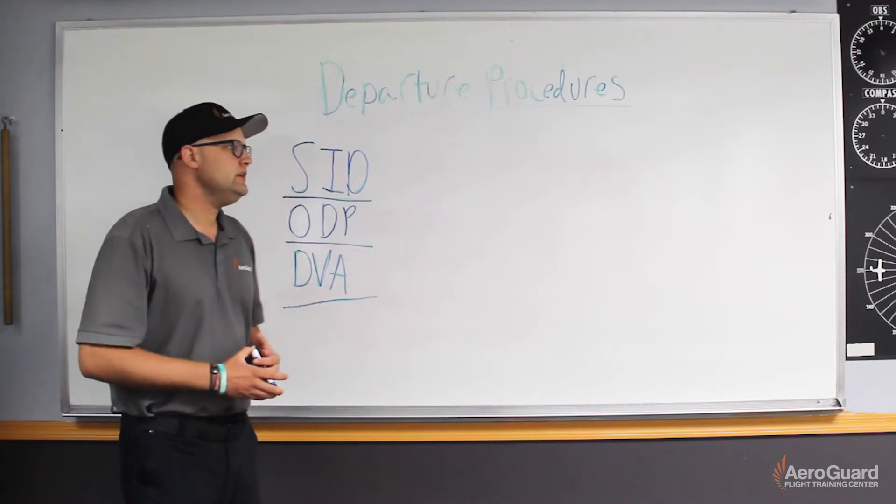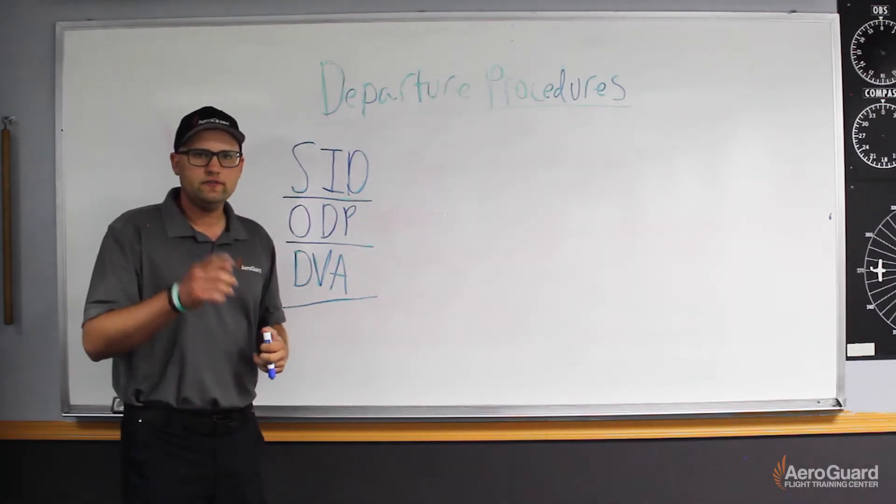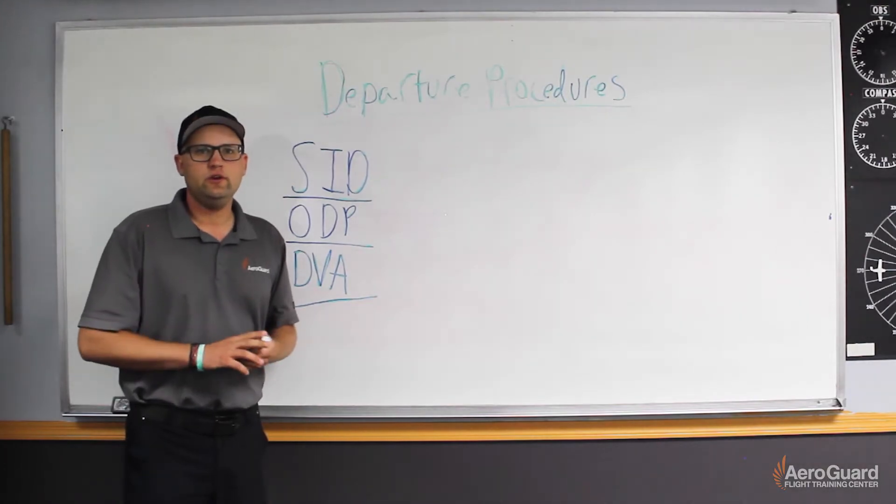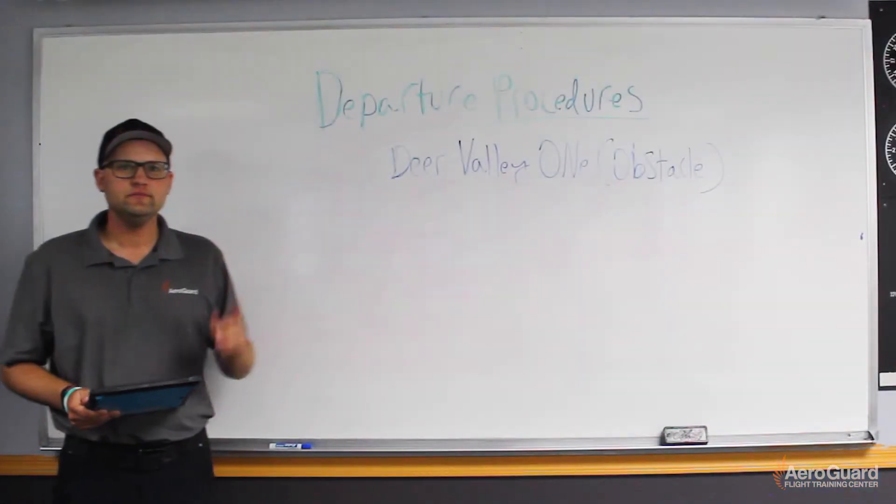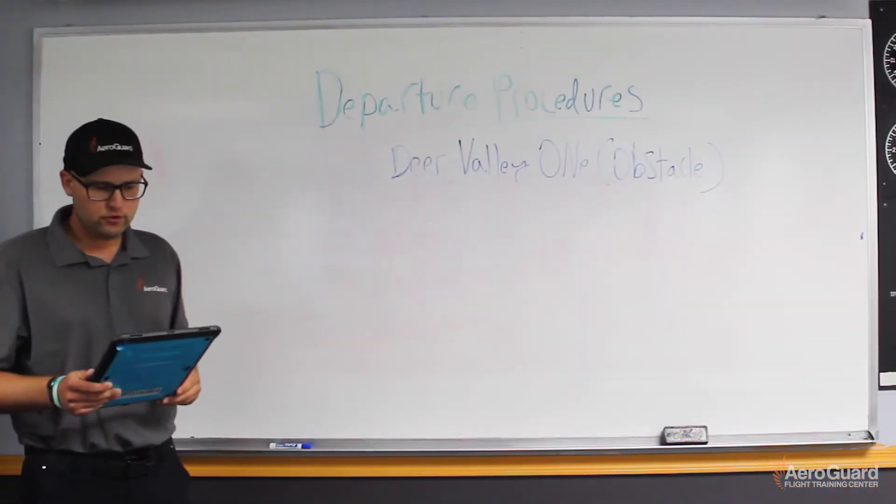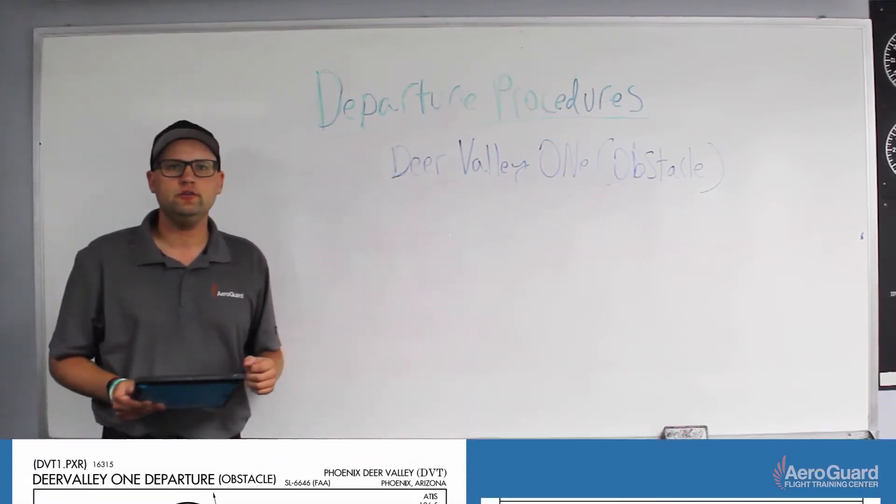Now let's go a little bit deeper into obstacle departure procedures. So pull out your foreflights and pull up the Deer Valley One departure.